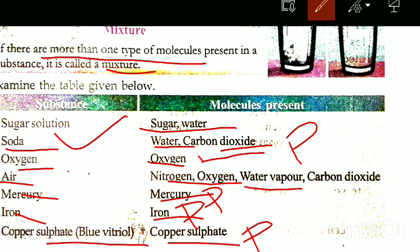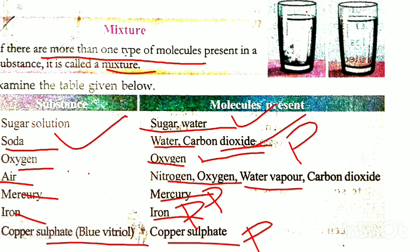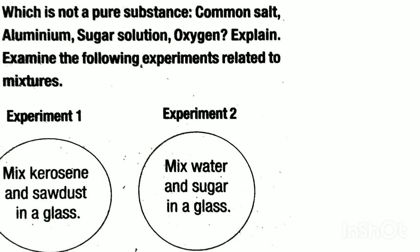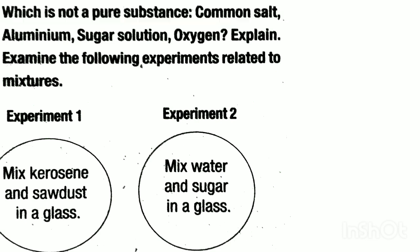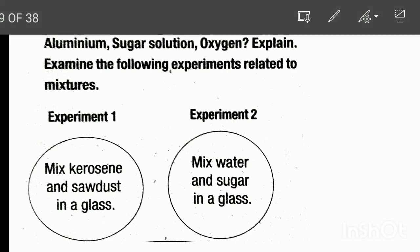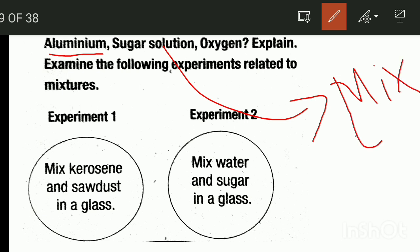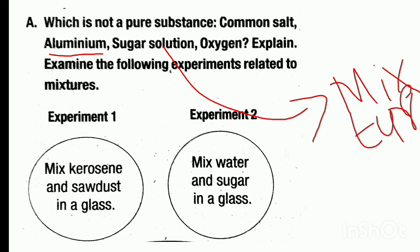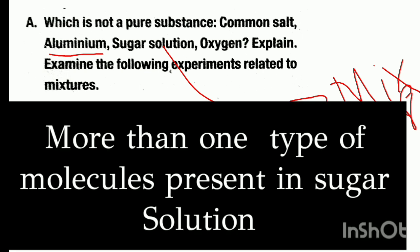Sugar and water, carbon dioxide — pure substance. Common salt — pure substance. Aluminium — pure substance. Sugar solution: more than one type of molecules is present in sugar solution, hence it is a mixture.